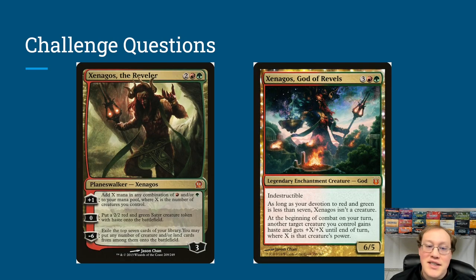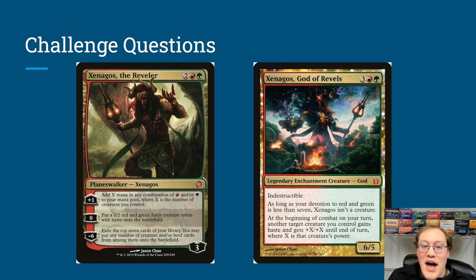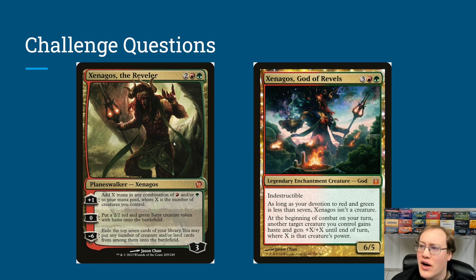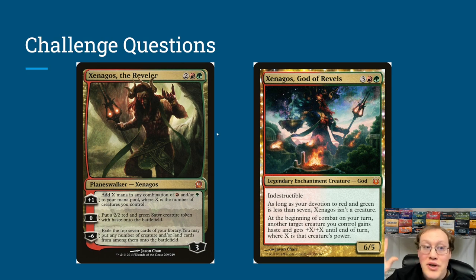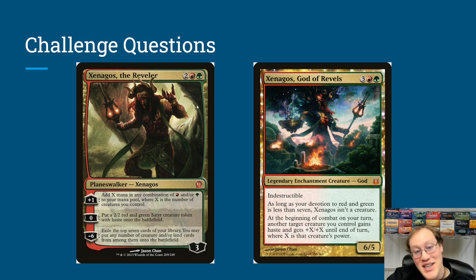Next challenge question: if you have Xenagos the Reveler and Xenagos the God in play, what happens? The answer: a whole lot of reveling — that's it. Even though they represent the same storyline character, they have different names. The legend rule only applies to legendary permanents with the same name, so having different names means the legend rule doesn't care. You can have both in play simultaneously with no problem.